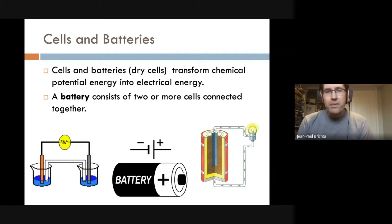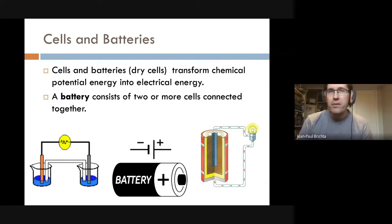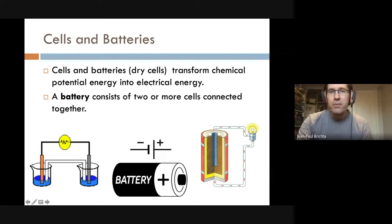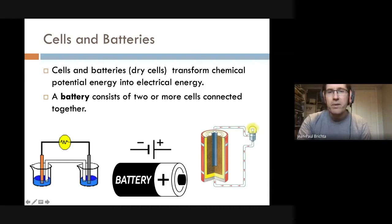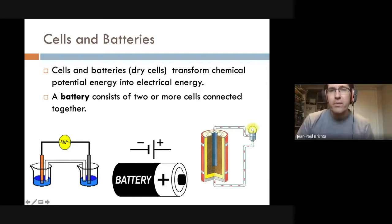In the diagram on the right, I want to point out the direction of the current as drawn. Ask yourself: is it conventional current or is it electron flow? Remember which end is the positive terminal — it's the little nub sticking out. The side without the nub is the negative terminal. So is this picture representing conventional current or electron flow?